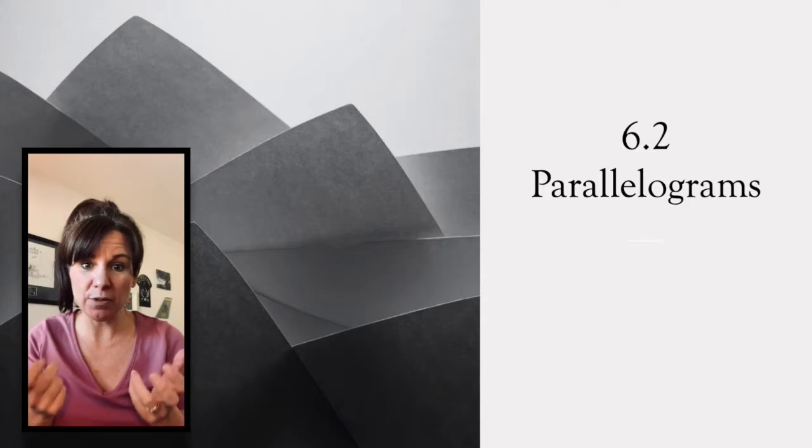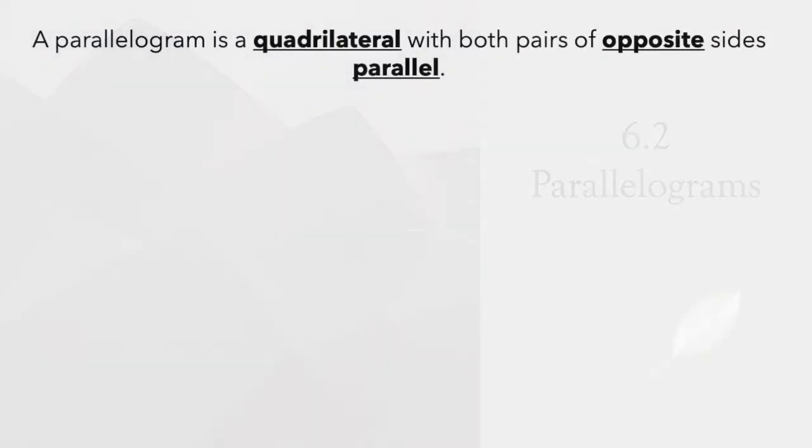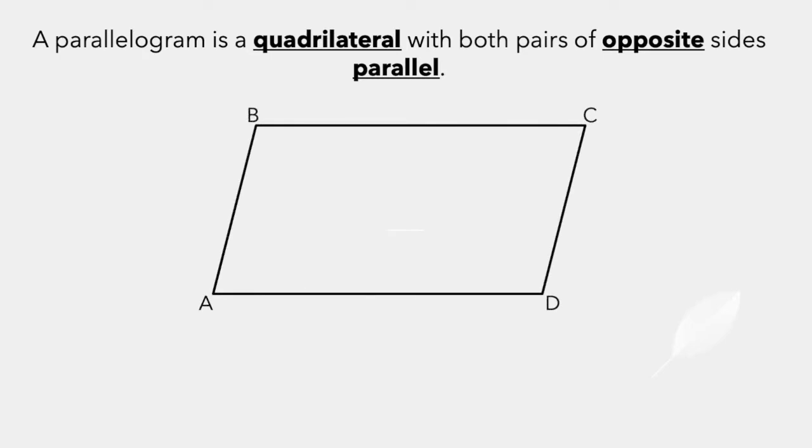We're going to start with these cool things called parallelograms. A parallelogram is a quadrilateral with both pairs of opposite sides parallel. They look kind of like this. And if we label the corners, we would call this parallelogram ABCD, where the side BC is parallel to the side AD and AB is parallel to DC.